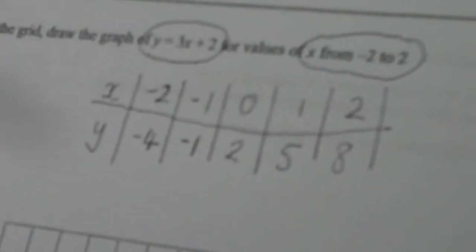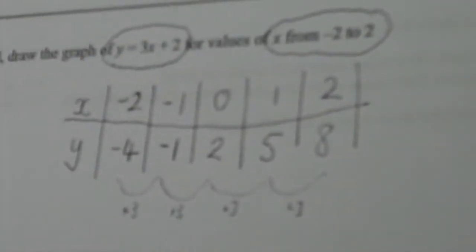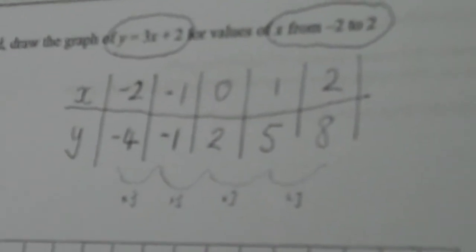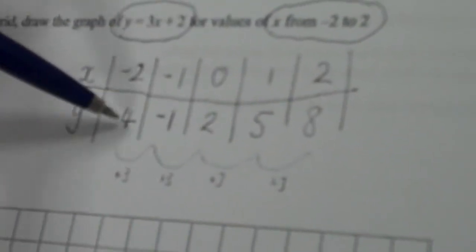You can do a little check here now as well because if you have a look at the values of y, they go up by 3. The values of y are going up by 3 every time so that gives me a nice feeling that my calculations are probably correct. So I know that my x values go from minus 2 to 2 and my y values go from minus 4 to 8.